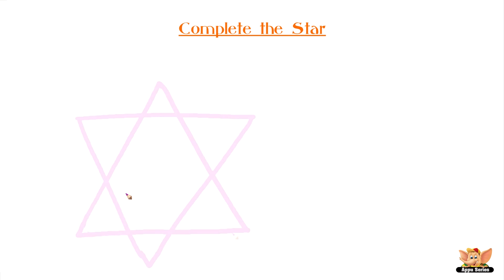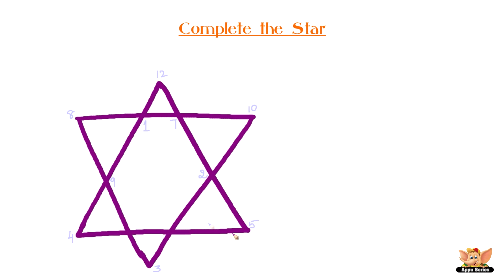Complete the star. A star here has numbers assigned on each of its corners, but two corners have question marks. Can you replace these question marks with the right numbers?